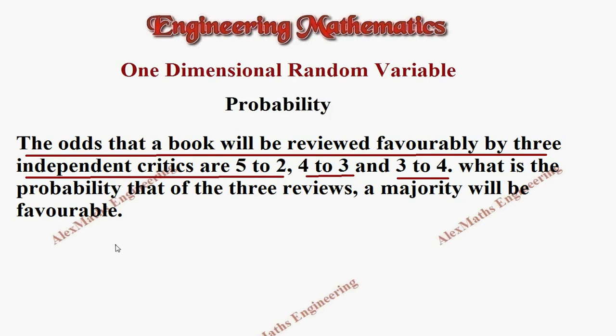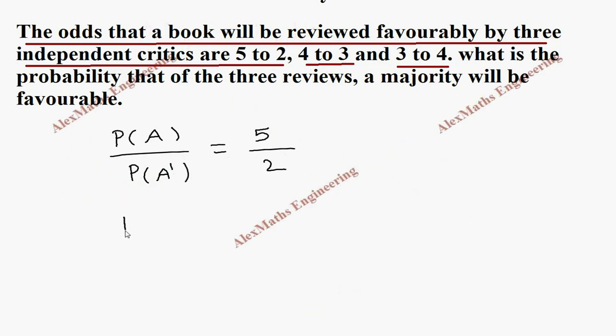Let's take the first critic as A. So probability of happening by probability of not happening is the odds favorable of an event, which is given as 5 to 2, which is 5 by 2. We can simplify this further: it is P(A) by 1 minus P(A) equal to 5 by 2.